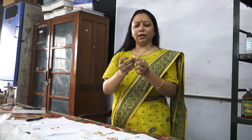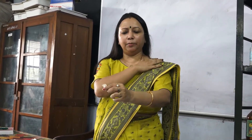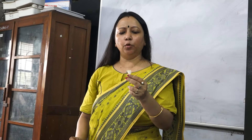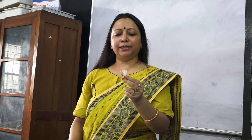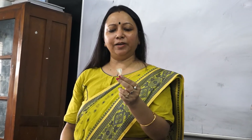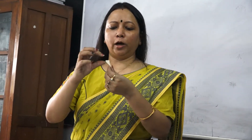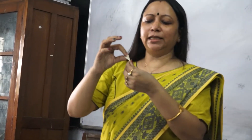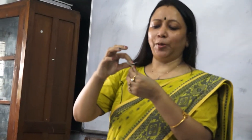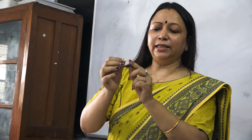The pectoral girdle connects the upper limb with the body. It has three main bones: the scapula, clavicle, and coracoid. This is the scapula spine, this is the glenoid cavity, and this is the pectoral girdle of guinea pig.